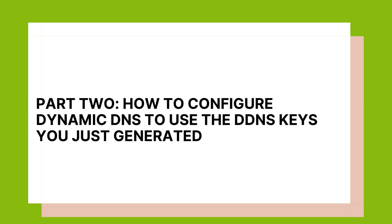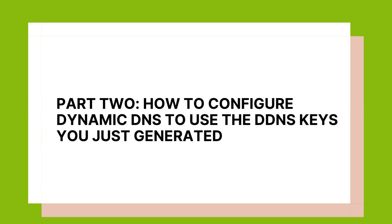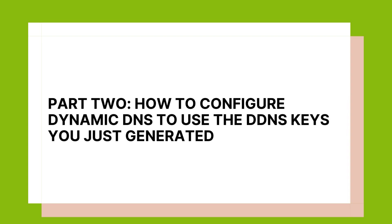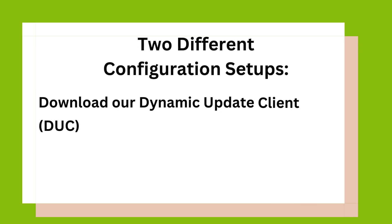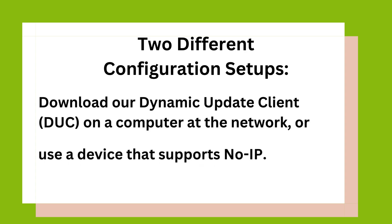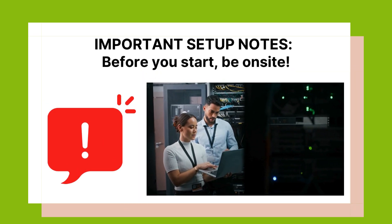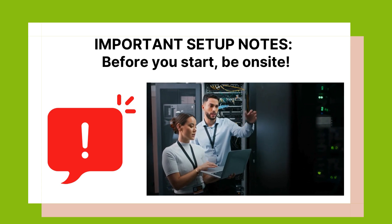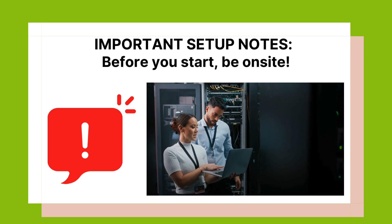We are now halfway through the DDNS key process. Now that the key is created, you can begin Part 2 and configure Dynamic DNS using the key you just created. To configure Dynamic DNS using the DDNS key, you can use one of two different setups. You can either download our Dynamic Update Client on a computer at the network, or you can configure Dynamic DNS on a device that supports NoIP, such as a router, DVR, or security camera. Both configurations require you to have access to a device that physically exists on the network you are wanting to access remotely.